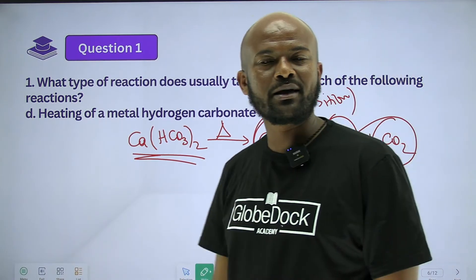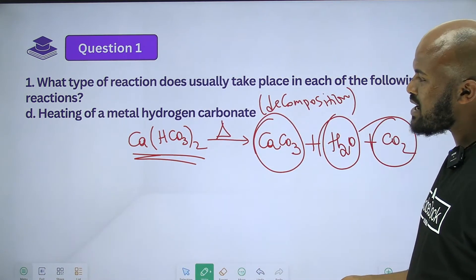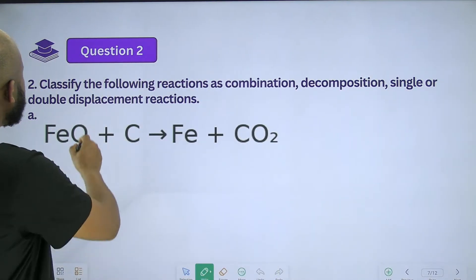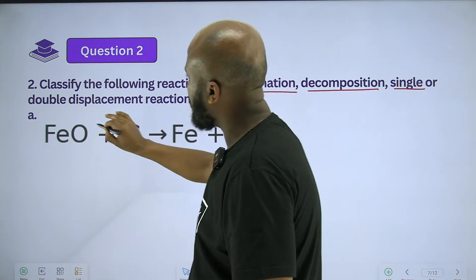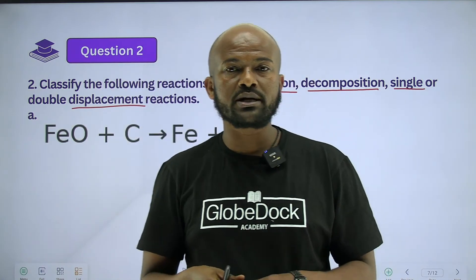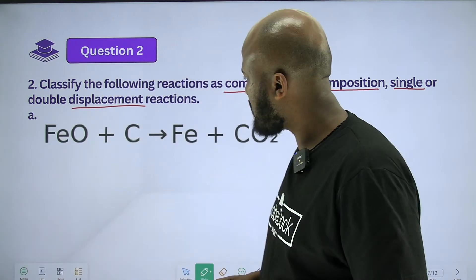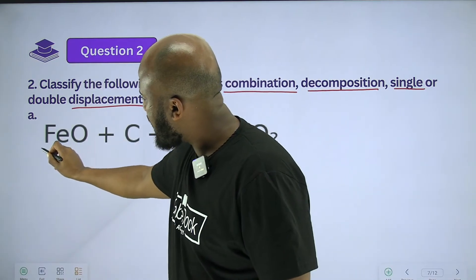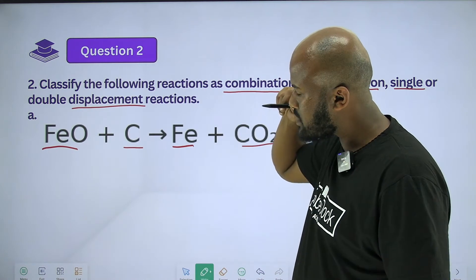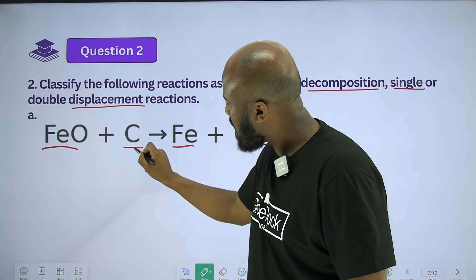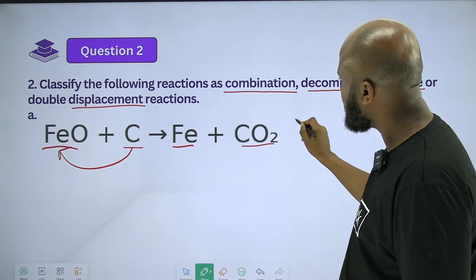Decomposition reaction. Now question two: classify the following reactions as combination, decomposition, single, or double displacement. Iron oxide reacting with carbon gives iron plus carbon dioxide. Carbon displaces iron, so this is a single displacement reaction.